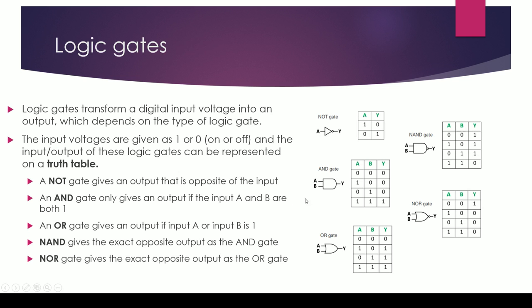Logic gates transform a digital input voltage into an output, and that depends on the type of logic gate you're using. The input voltages are given as 1 or 0, or you could call it on or off. For simplicity, we'll call them 1 and 0.